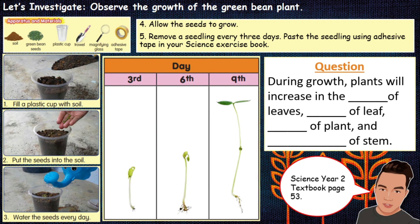In your textbook on page 53 there are four blanks to complete. Let's read this together: during growth, plants will increase in the number of leaves, size of leaf, height of plant, and circumference of stem. Remember, during growth there are four changes or increases: number of leaves, size of leaf, height of plant, and circumference of stem. I hope you can understand this.